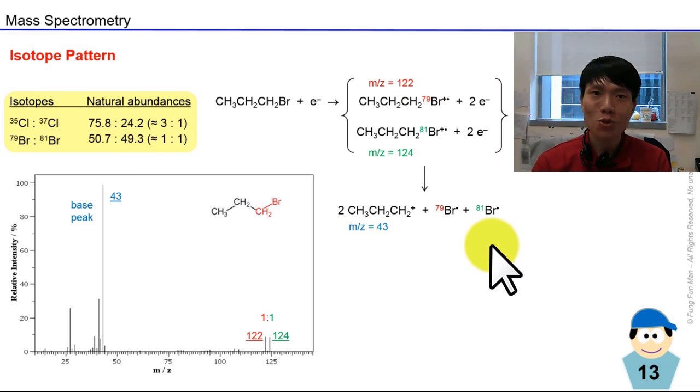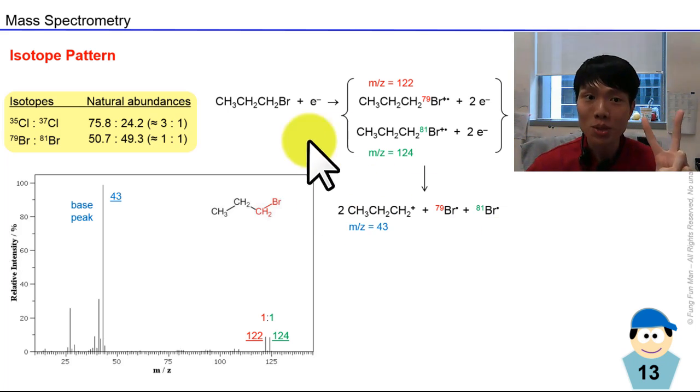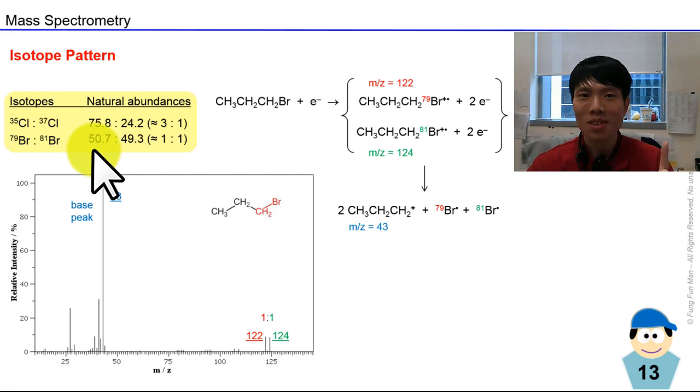Something very interesting about mass spectrometry is you can tell whether your compound has certain elements, in particular the halogens chlorine and bromine. Chlorine exists in two forms: chlorine-35 and chlorine-37, occurring at natural abundances of about 3 to 1. For bromine, you have bromine-79 and bromine-81 at approximately a 1 to 1 ratio.